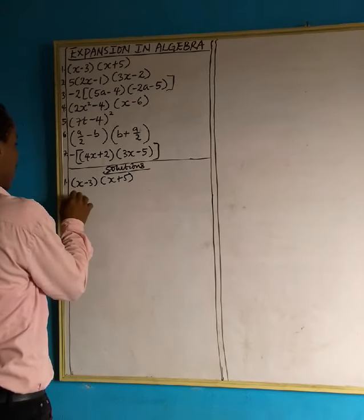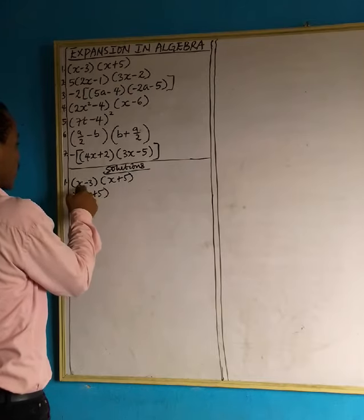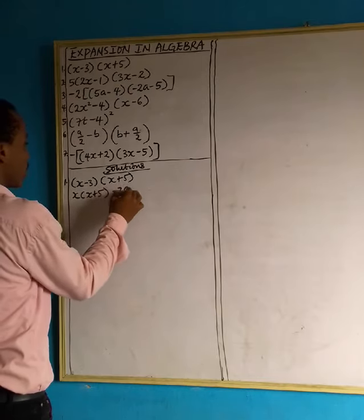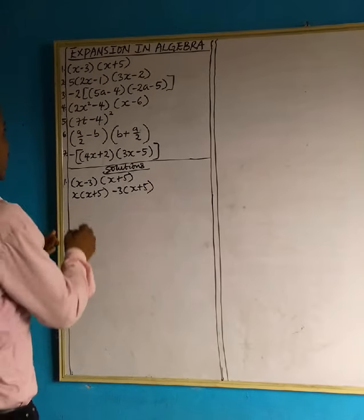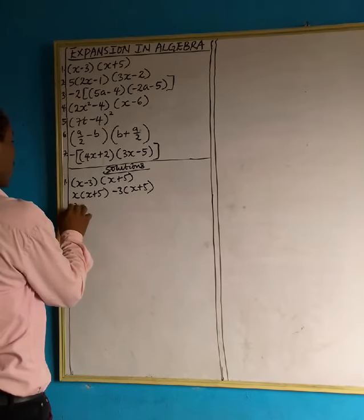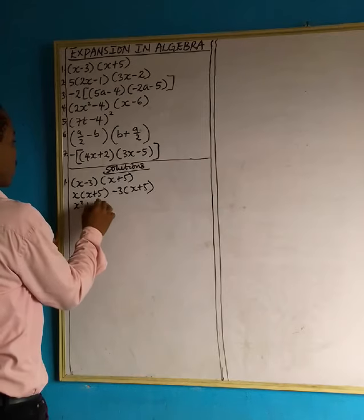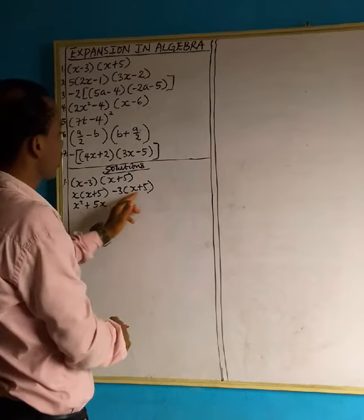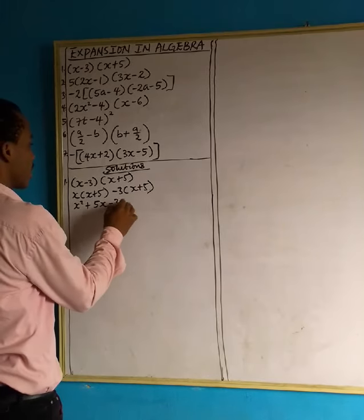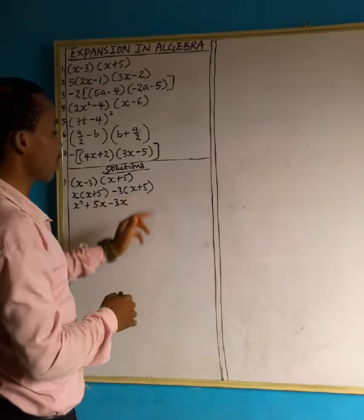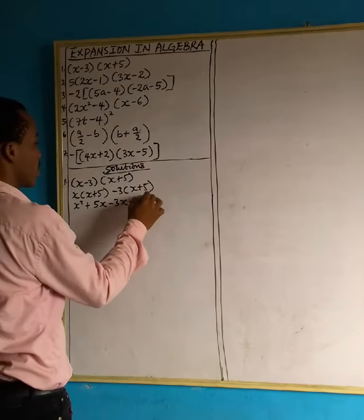Take the first term x, multiplied by everything in bracket x plus 5. Take the second, minus 3, into bracket x plus 5. x times x gives us x squared, plus x times 5 gives us 5x. Minus 3 multiplied by x gives us minus 3x, and minus 3 multiplied by positive 5 gives us negative 15.